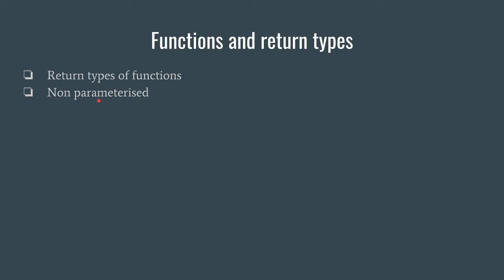Functions can be classified into two major types: non-parameterized functions and parameterized functions. Non-parameterized functions do not take any kind of arguments - we do not need to pass any values to call such functions. In parameterized functions, it is just the opposite: whenever you need to make a call, you must also pass certain values to that function.